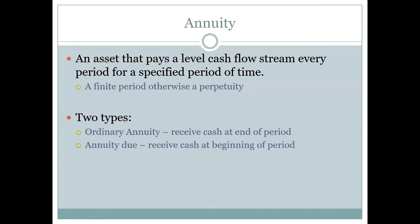The definition of an annuity is that it is a financial asset that pays a level cash flow — level meaning the same amount every period — for a specific period of time, meaning it has a fixed length. Annuities do not go on forever. That is the biggest difference between an annuity and a perpetuity, because a perpetuity goes on forever.